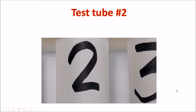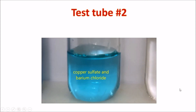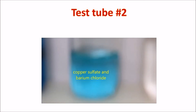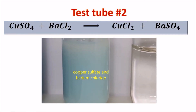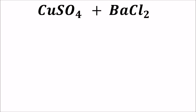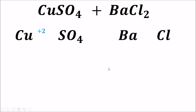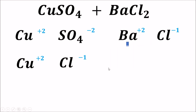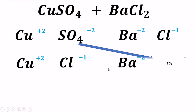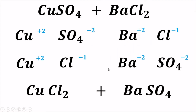Test tube 2: copper sulfate and barium chloride. We will do the same thing. We have copper sulfate plus barium chloride. We separate the components, get each ion's charge, and the double displacement reaction gives us copper chloride plus barium sulfate.